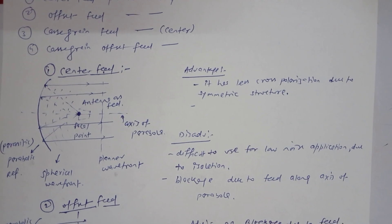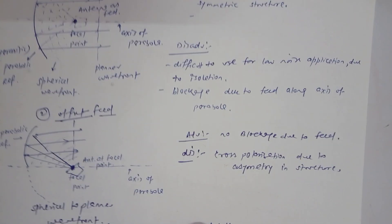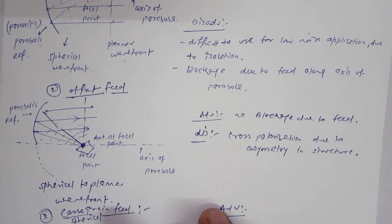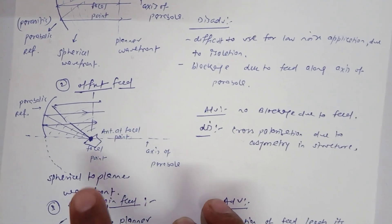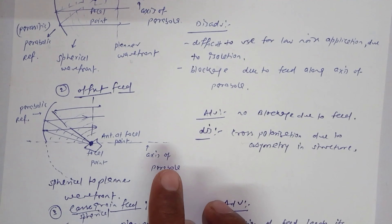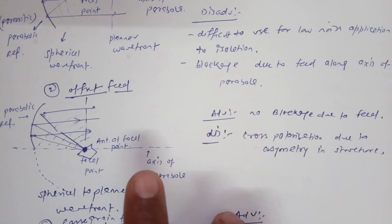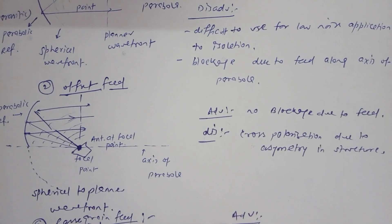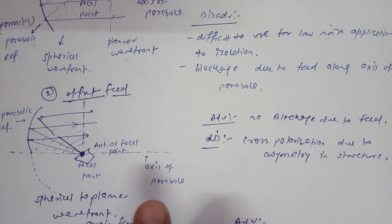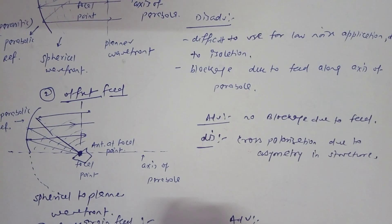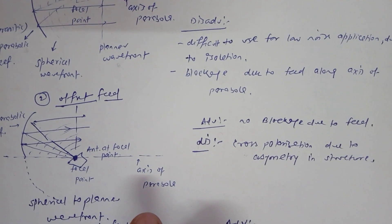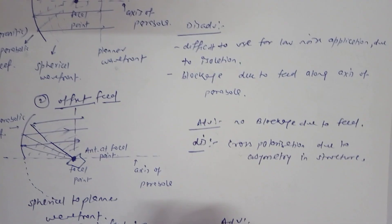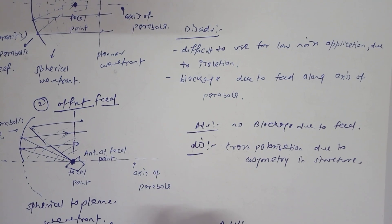To overcome these disadvantages, we use the offset feed parabolic reflector. In this mechanism, instead of a complete parabolic reflector, only half of the parabolic reflector is used. The feed horn is placed at the focal point but at an inclination. The spherical wavefront is still converted to a planar wavefront, increasing directivity. The advantage is no signal blockage, but the structure is no longer symmetric, so cross-polarization occurs.